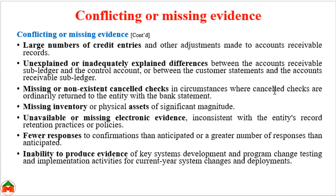Other conflicting or missing evidence indicators include: missing or non-existent cancelled checks in circumstances where cancelled checks are ordinarily returned to the entity with the bank statement; missing inventory or physical assets of significant magnitude — if a high-value asset is missing, that also indicates fraud risk; and unavailable or missing electronic evidence inconsistent with the entity's record retention practices or policies.